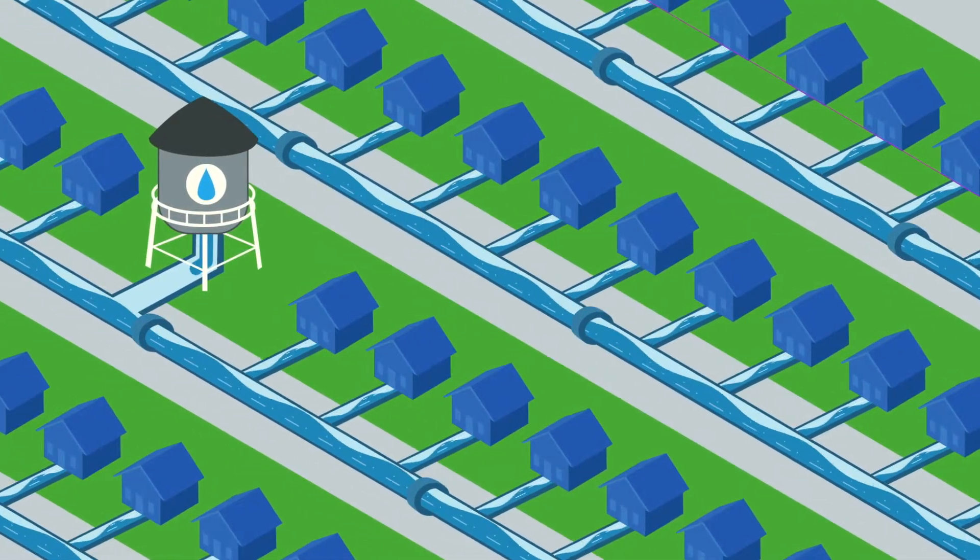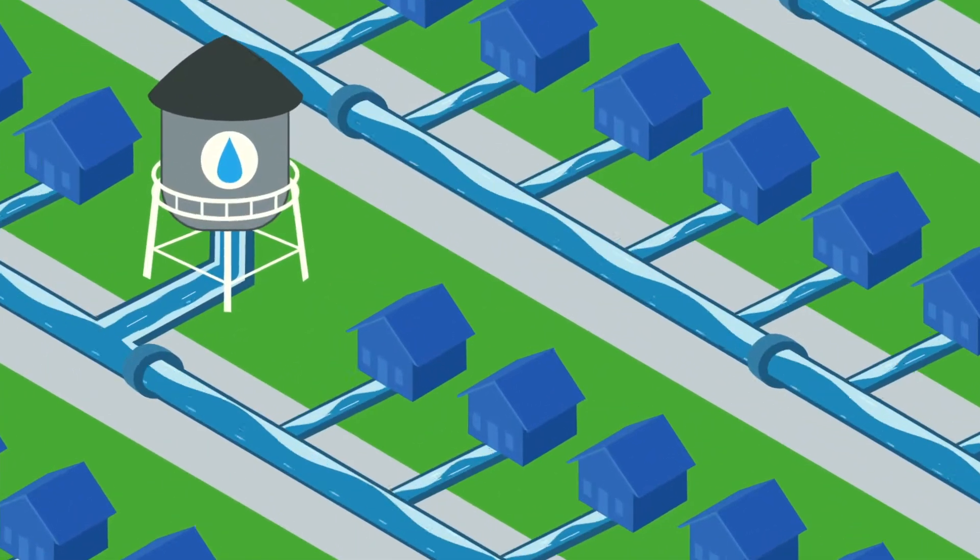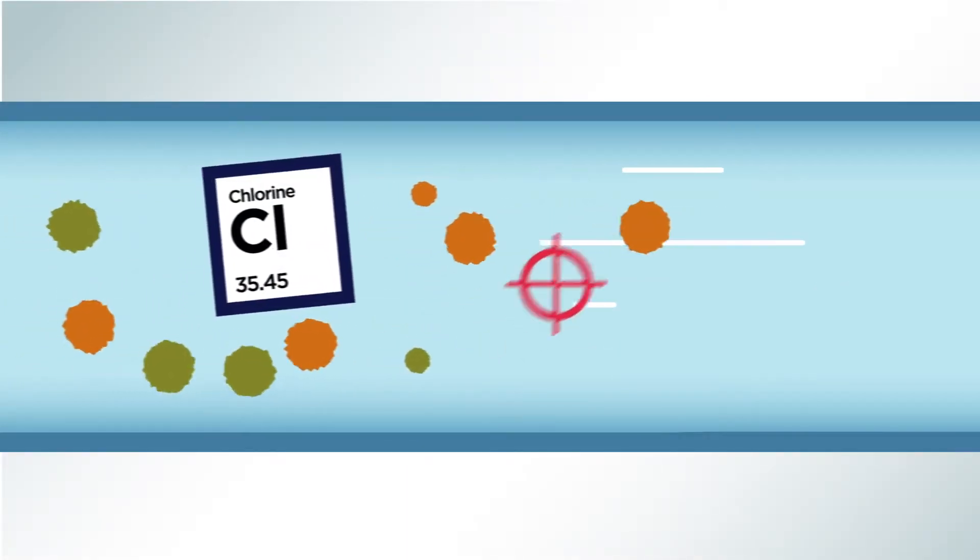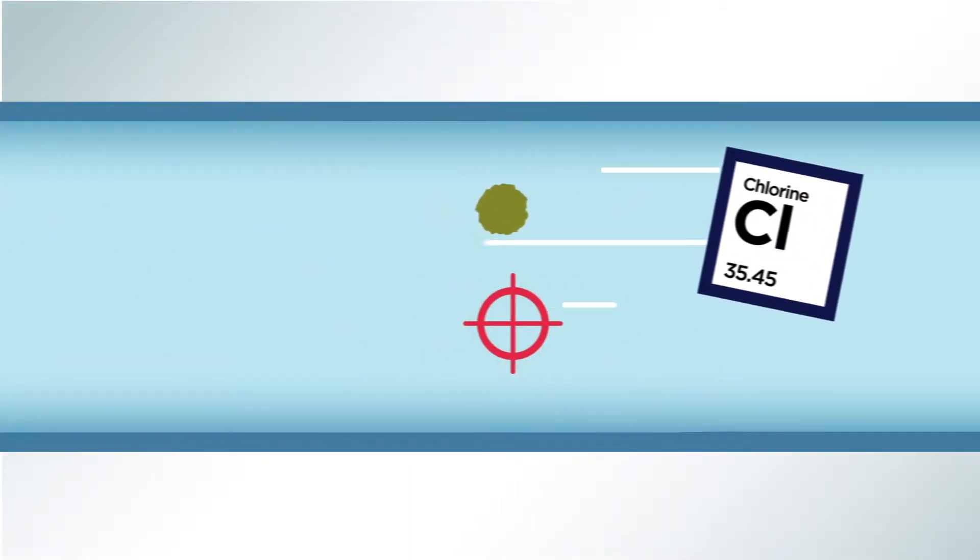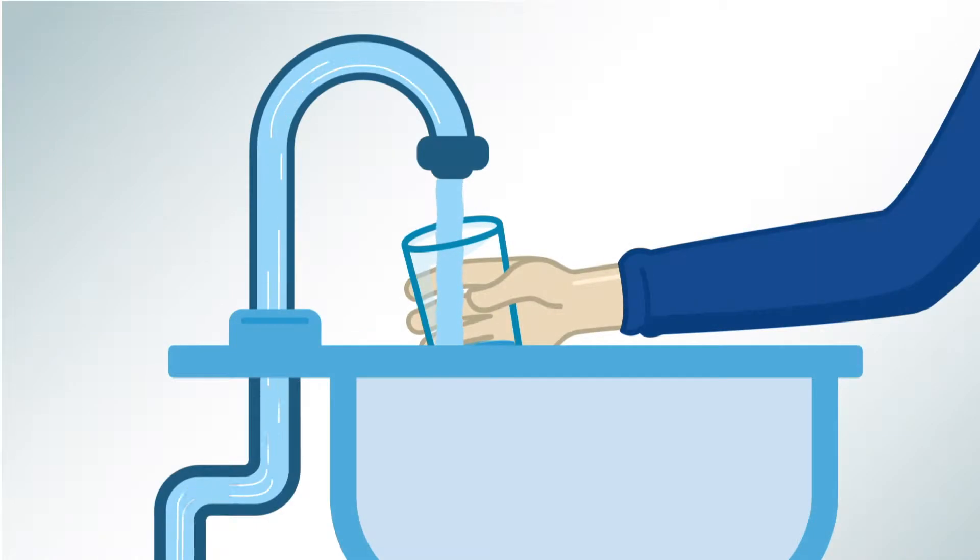We're fortunate to have quality water distributed to homes in most of America. Local utilities treat your water with safe levels of chlorine, protecting it from germs as it travels to your faucet.